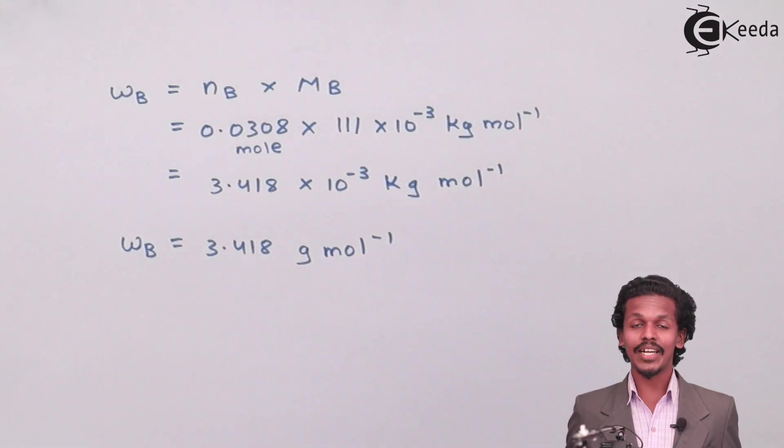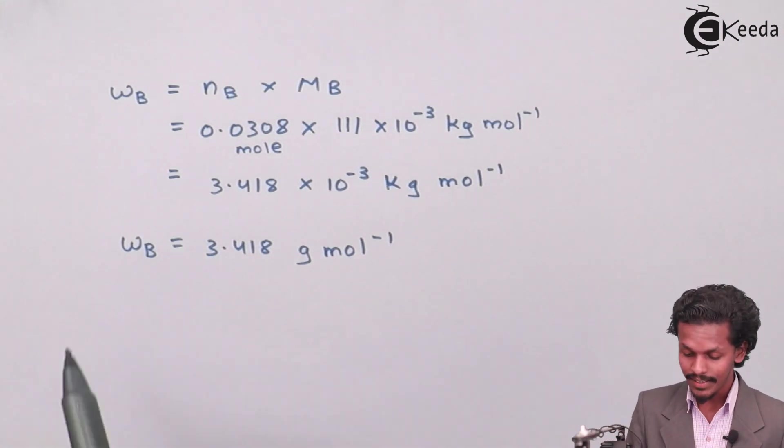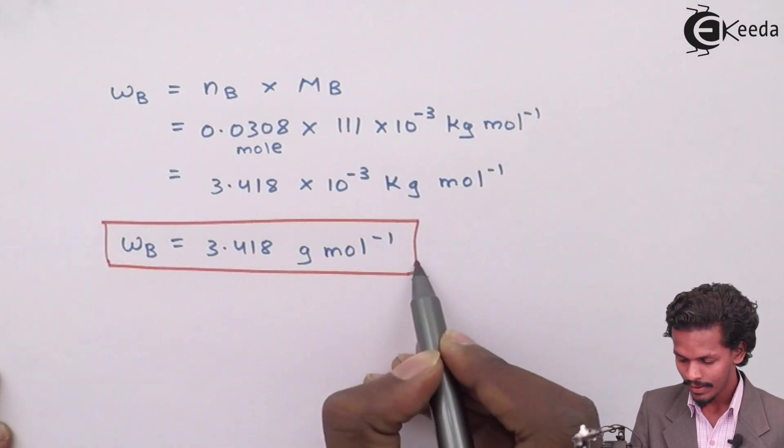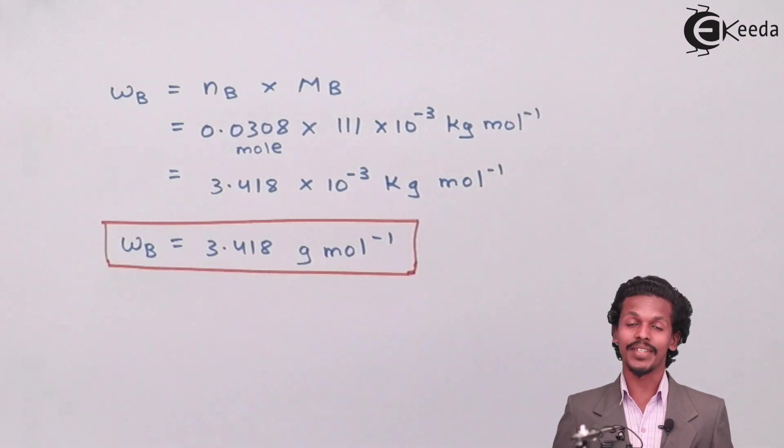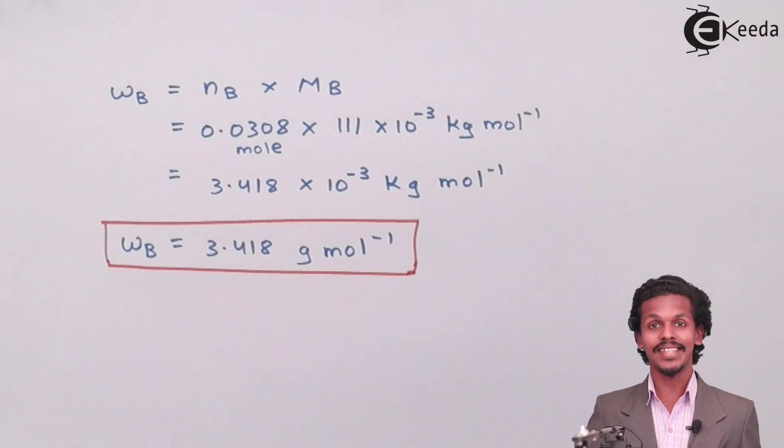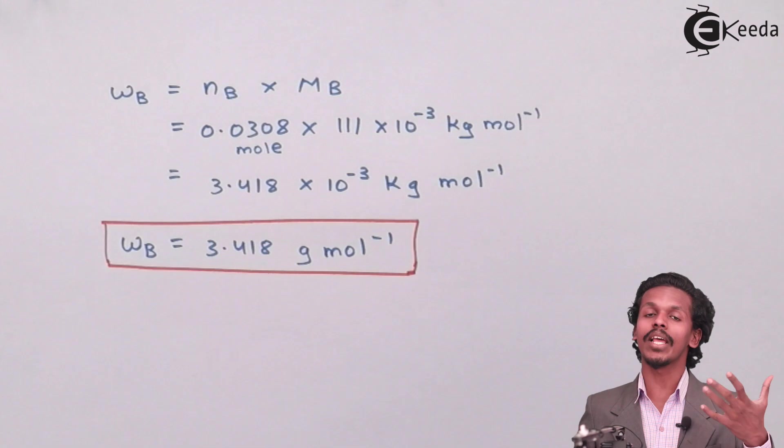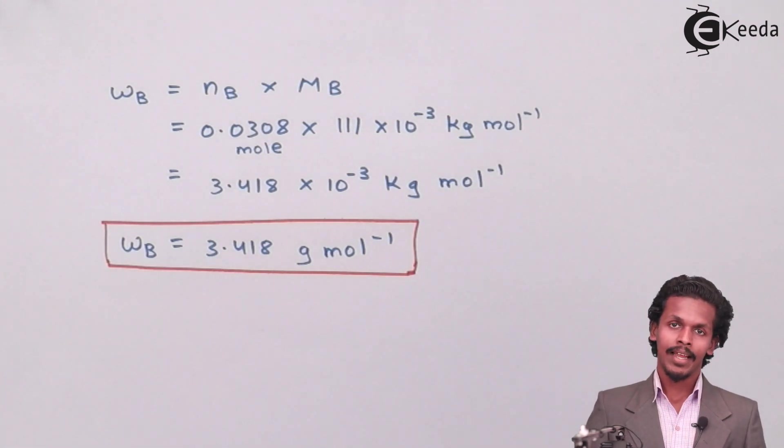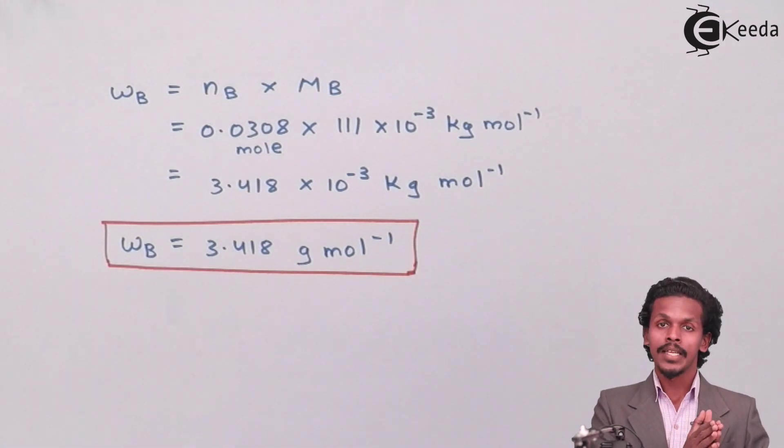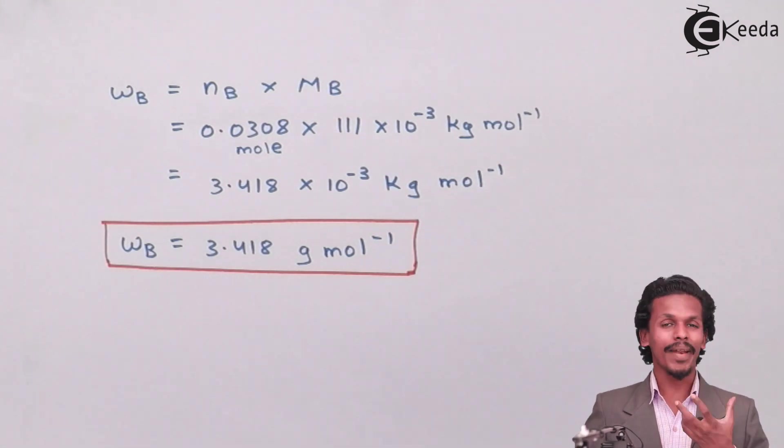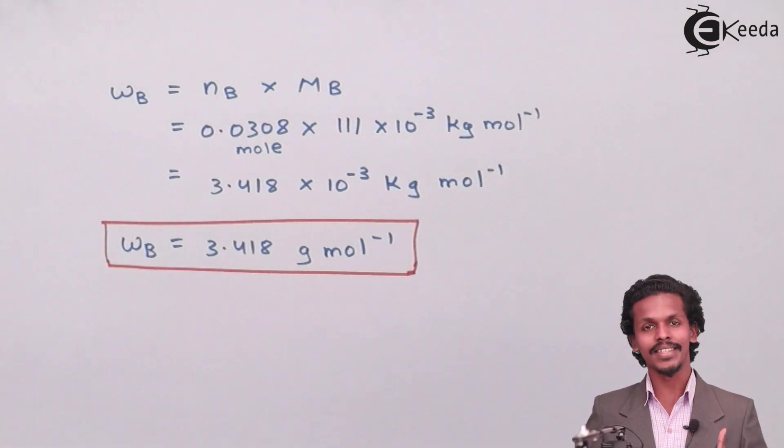So this is the final answer that we have got. We have calculated the amount of solute, that is the amount of CaCl2 present in the solution which contains a Van't Hoff factor more than one, in the format of the number of moles of solute as well as the weight of the solute present in the solution.